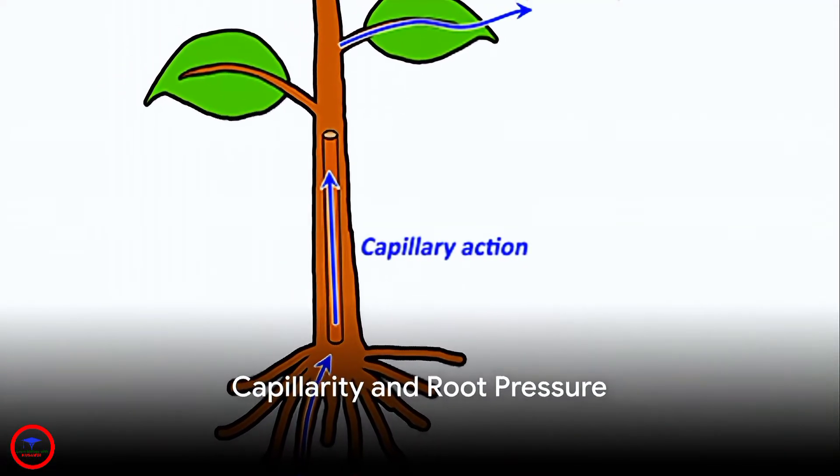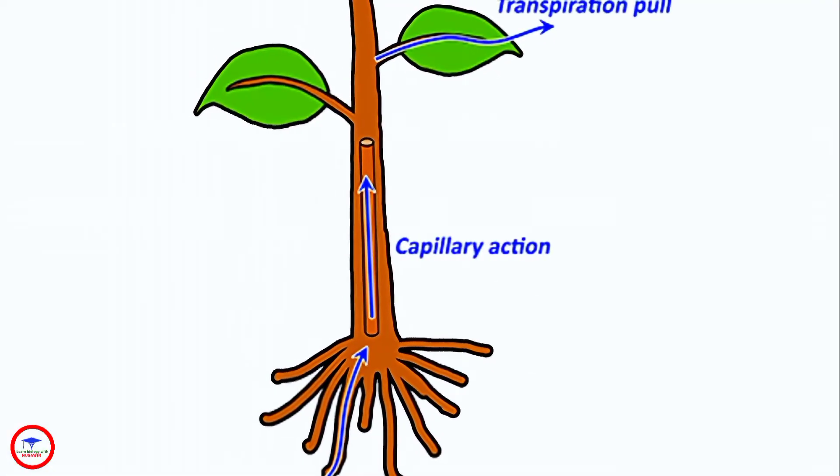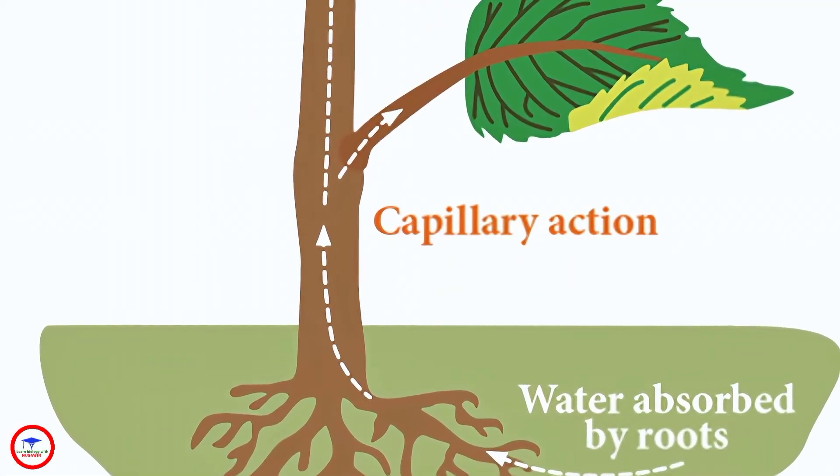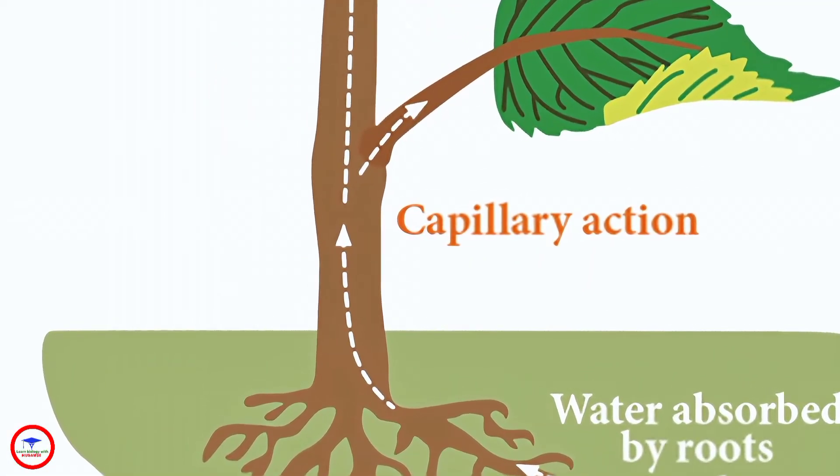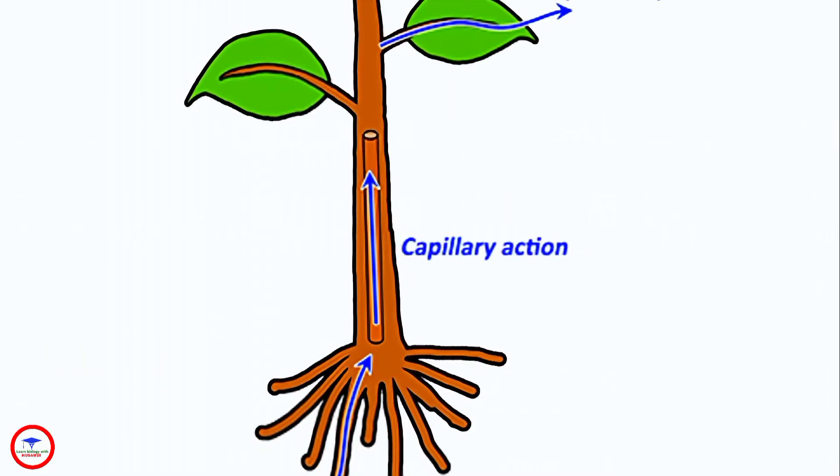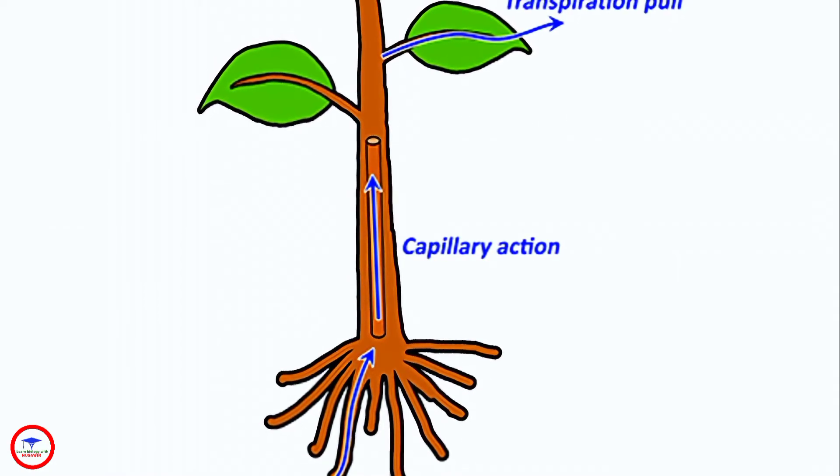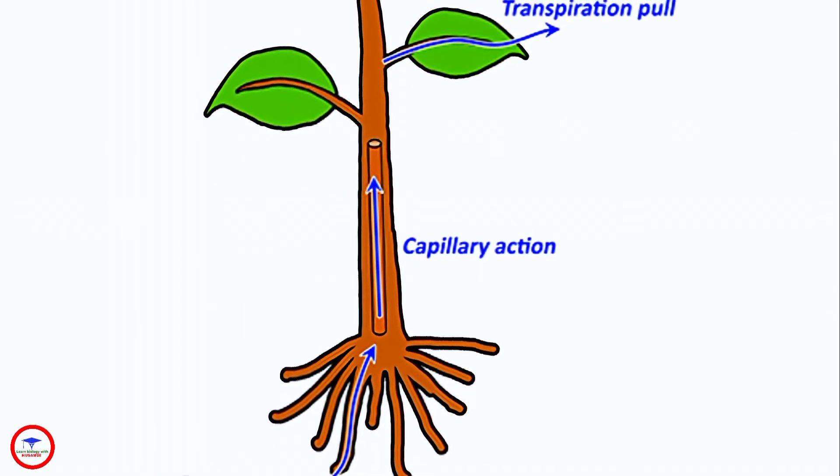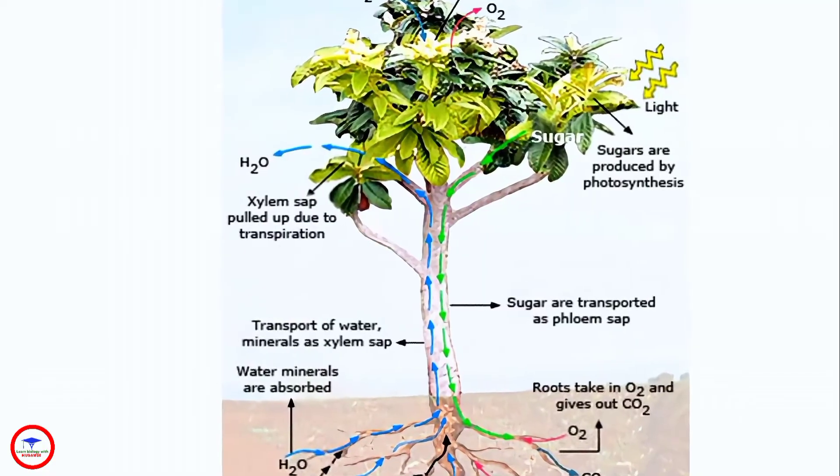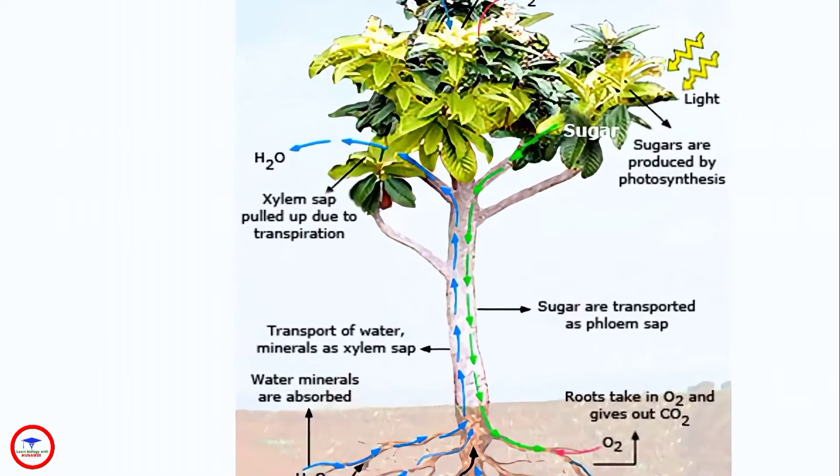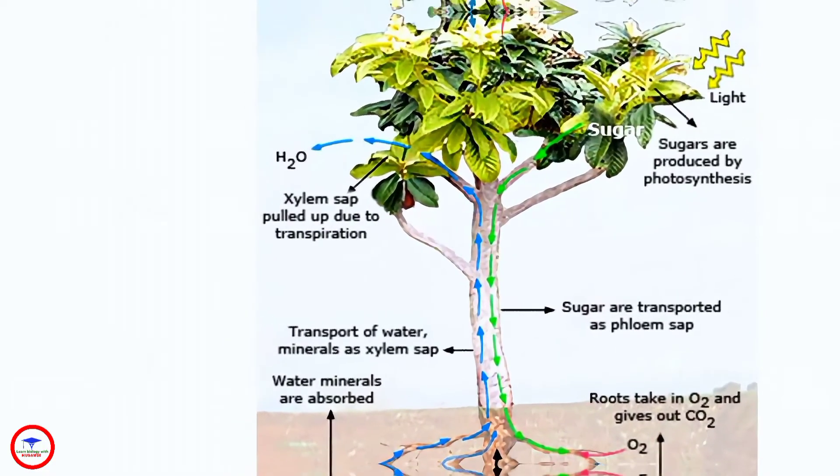Finally, we come to two key concepts, capillarity and root pressure. Capillarity is the tendency of a liquid in a narrow tube to rise or fall due to surface tension, while root pressure is the pressure exerted by the roots to push water upwards. Both play a crucial role in the transportation of water and other materials in plants.